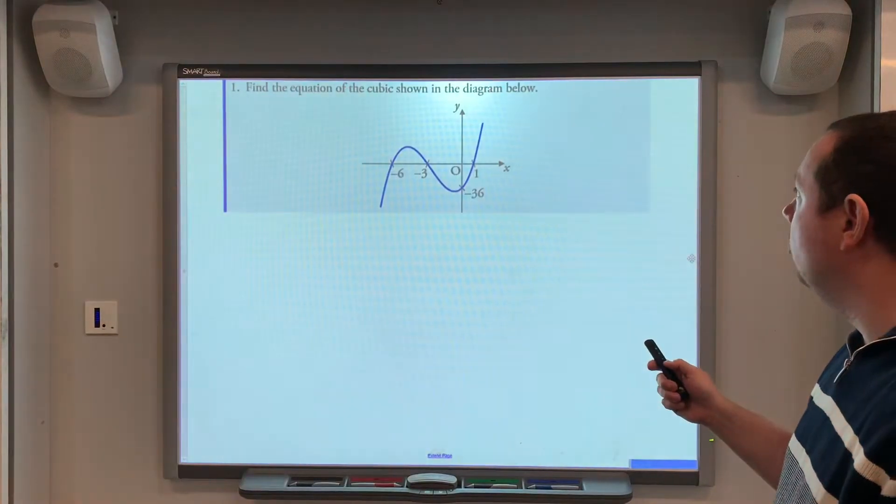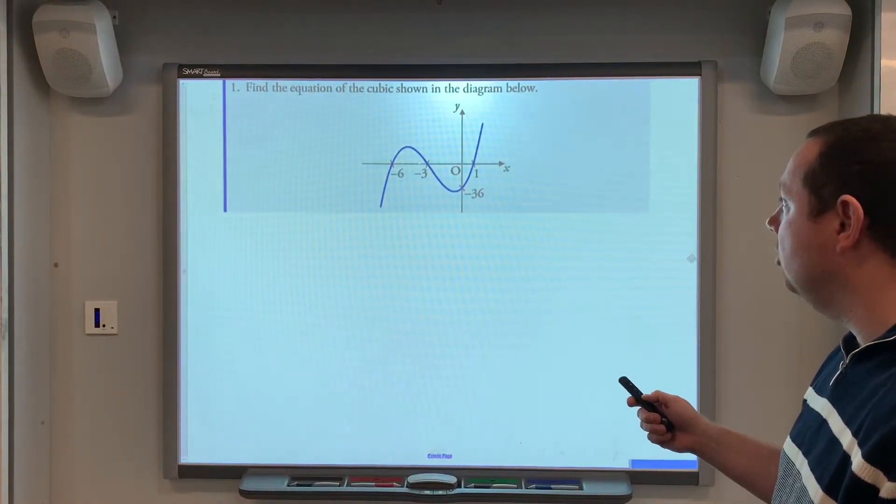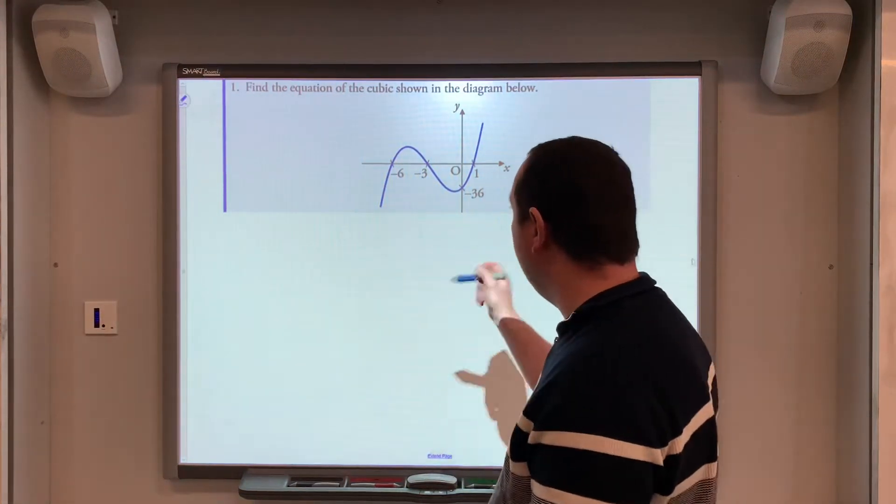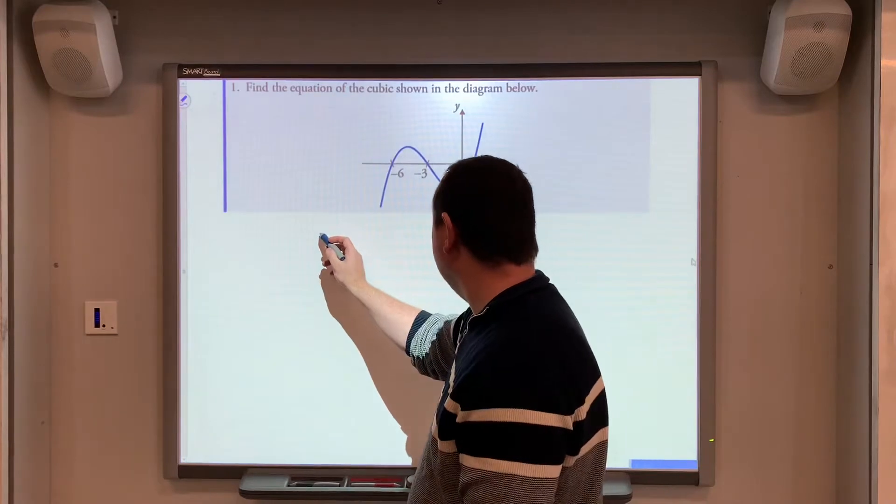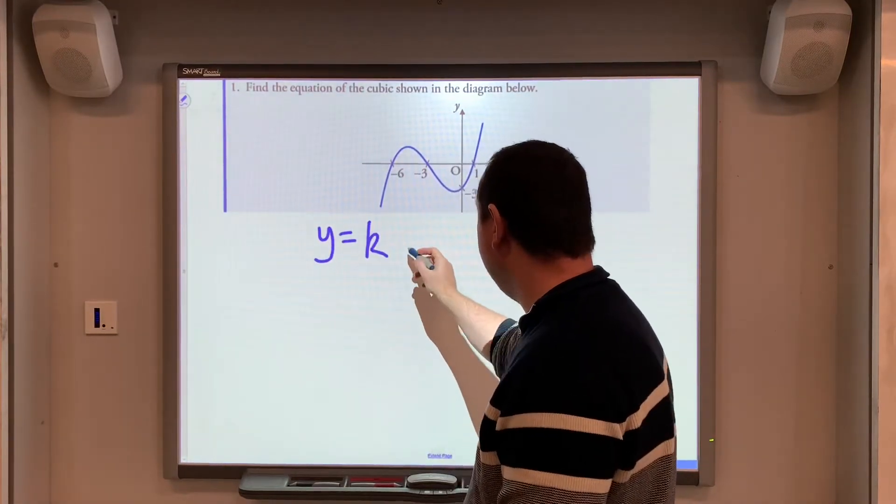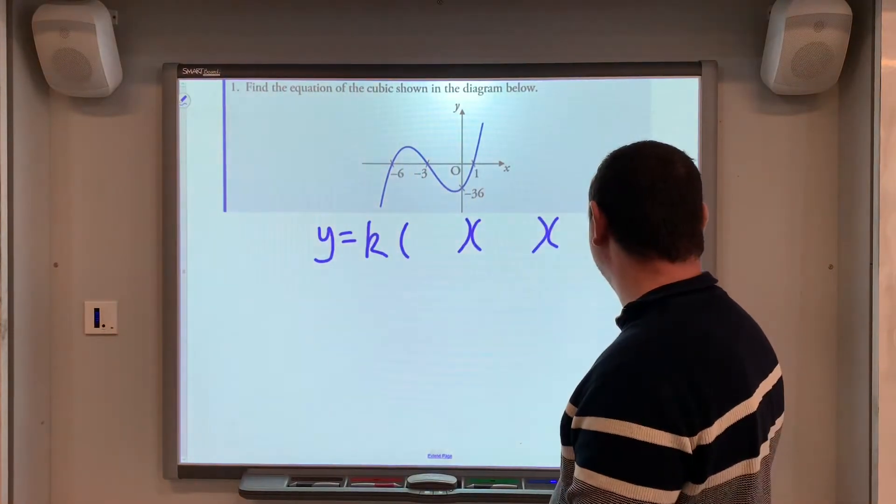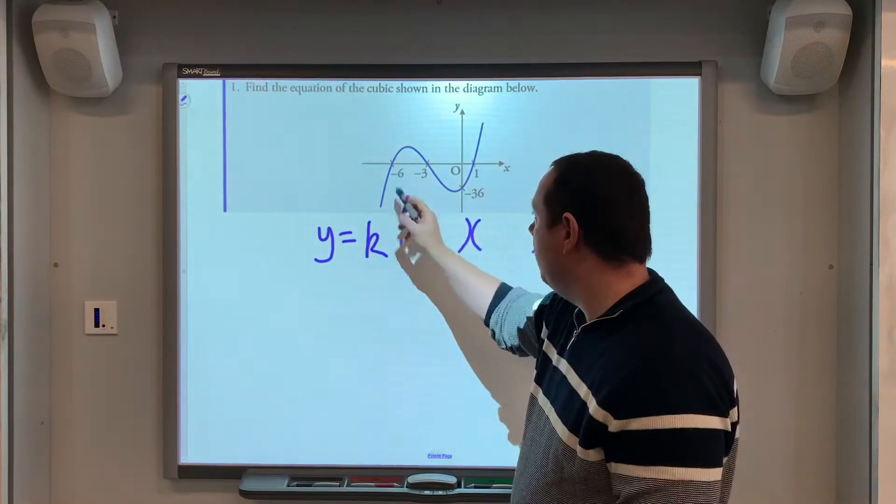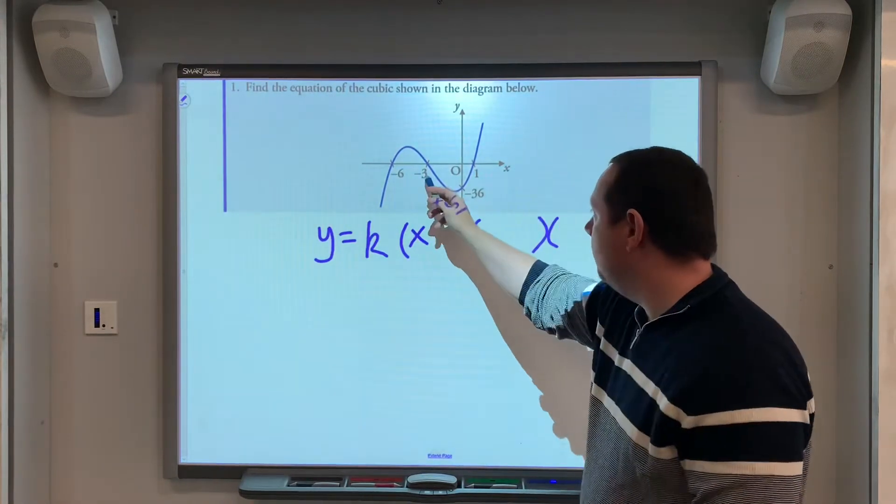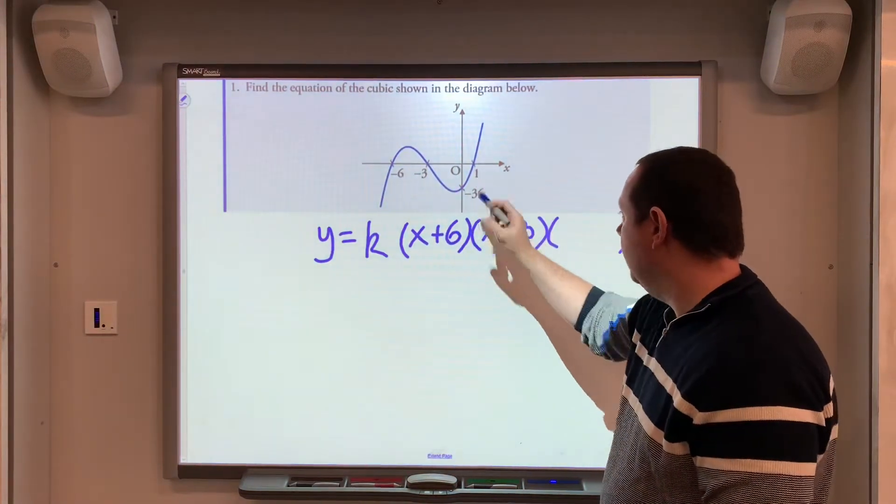Find the equation of the cubic shown in the diagram below. So here is our cubic, there's our roots. So immediately, we know that the equation of this is y equals some number that's called k times, well, there's going to be three factors, because there's three roots. x minus minus 6, so x add 6. x minus minus 3, so x add 3, x minus 1.